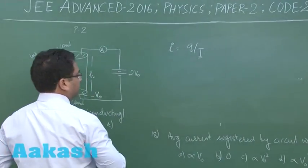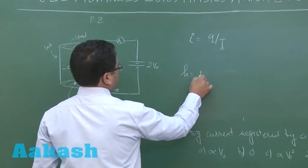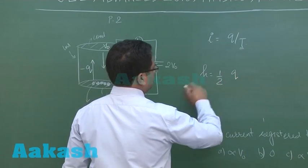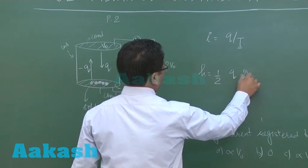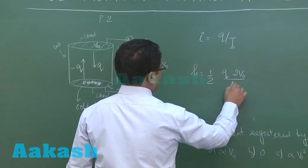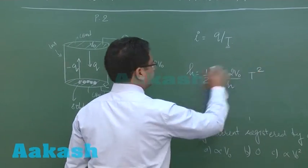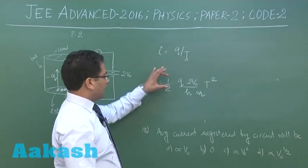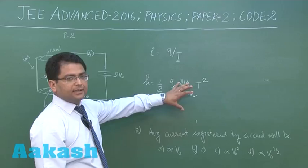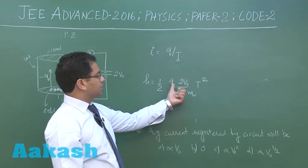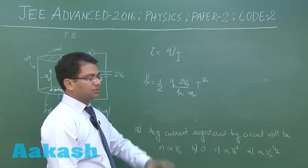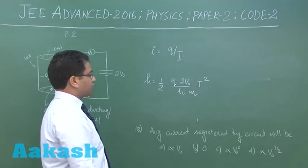H would be half of AT², so which would be Q into 2V₀ by H into T², because the acceleration... and I require M as well. Look, half AT² - acceleration is Q into electric field divided by mass into T². That's the point.